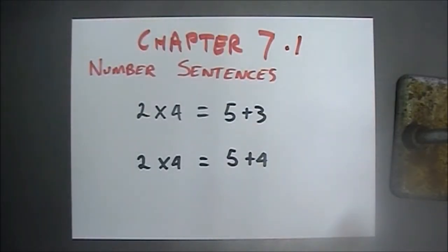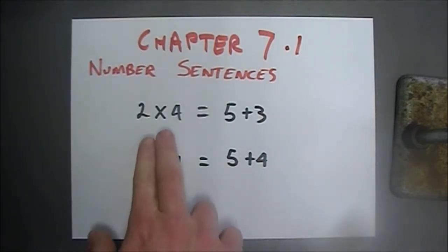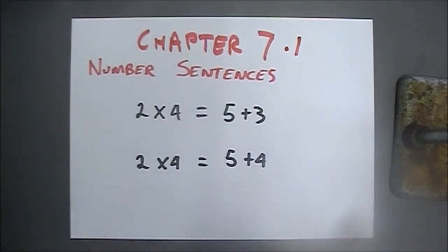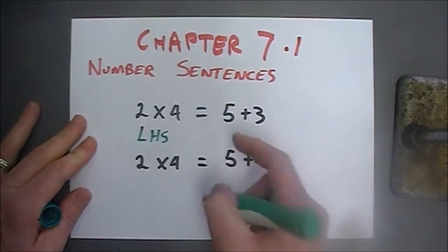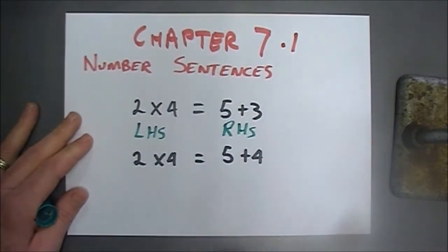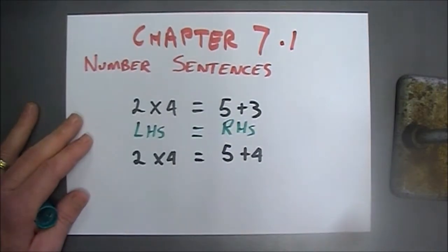Chapter 7, Linear Equations 7.1 — Number Sentences. What we're looking at is equations and number sentences. What we need to make sure is that this side equals this side. The left-hand side is obviously the right-hand side. We can look at this and say 2 times 4 is 8, and 5 plus 3 is 8. So the left-hand side equals the right-hand side — it's a true number sentence.